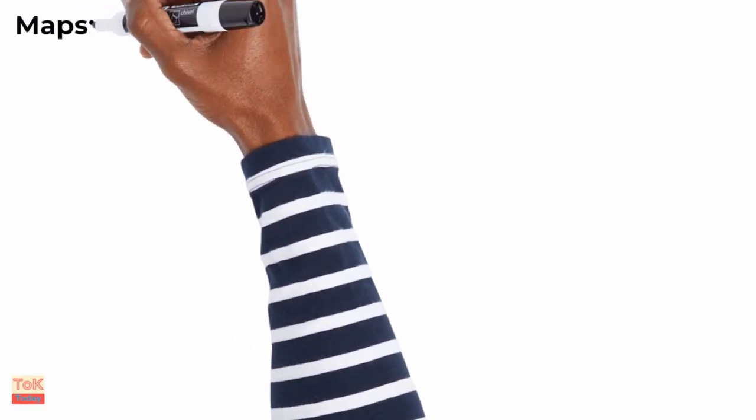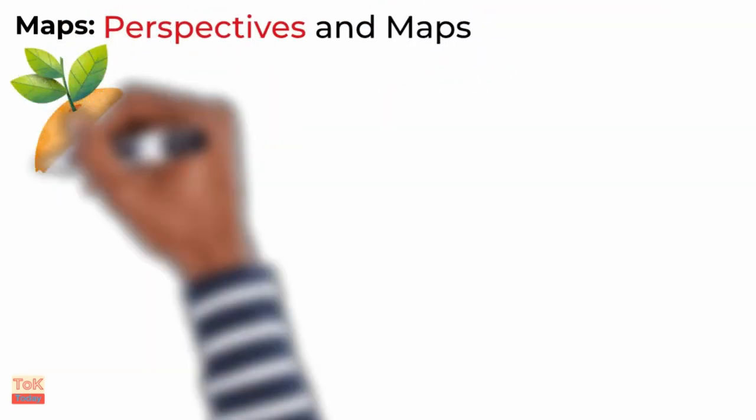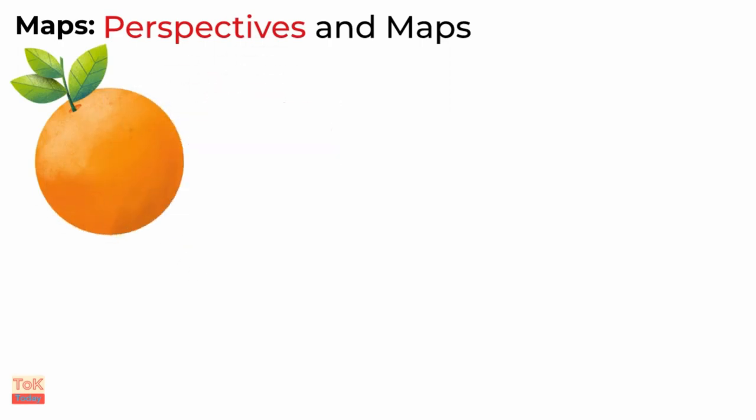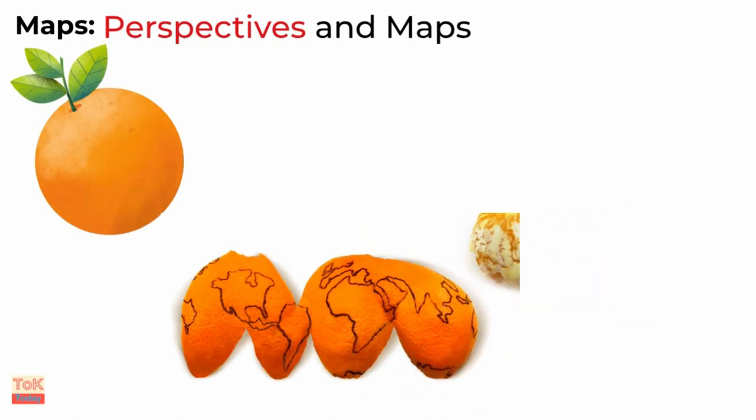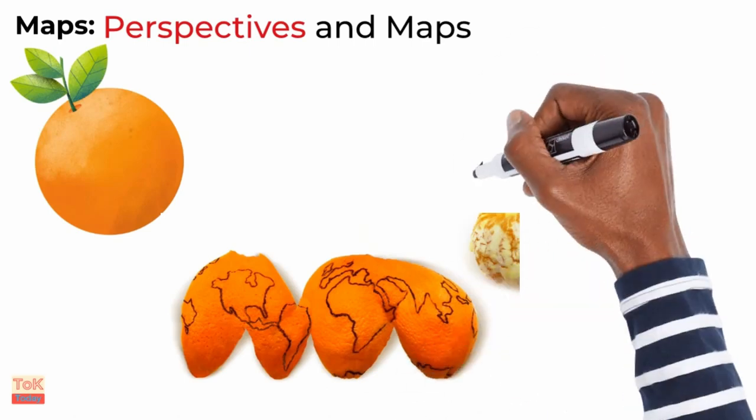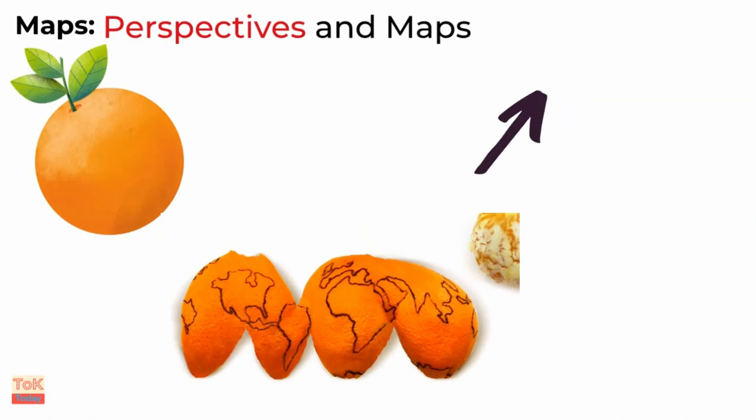The rest of us will move on to consider maps. Specifically, the relationship between perspectives and maps. Perspectives, a TOK concept, I like focusing the TOK essay around concepts. Now, you may remember that geography lessons, when you drew maps of the world on oranges, peeled the oranges and tried to flatten the peel. The objective is to show how difficult it is to represent a three-dimensional space on a two-dimensional projection.